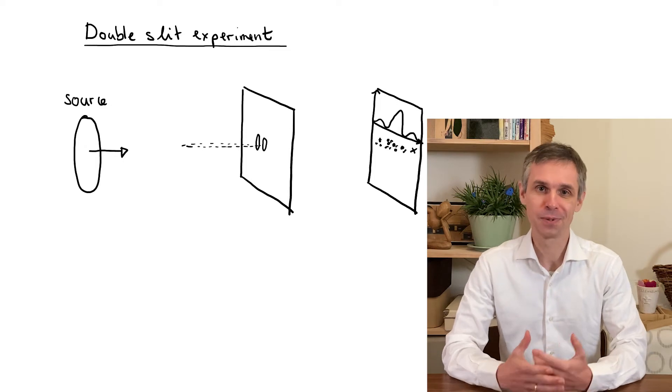So there are two key observations at this point: the probabilistic arrival of the particles on the screen, and the fact that we observe a diffraction pattern.